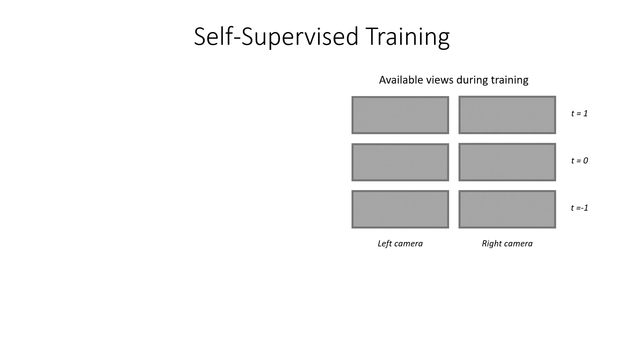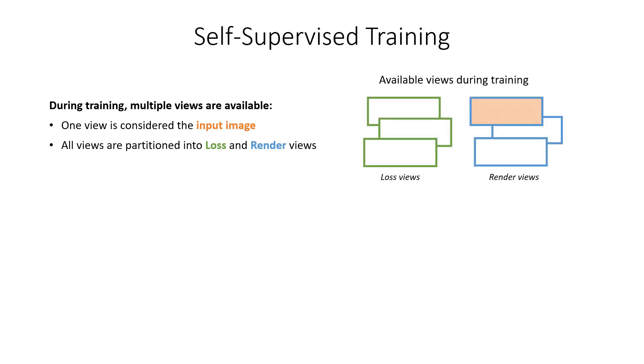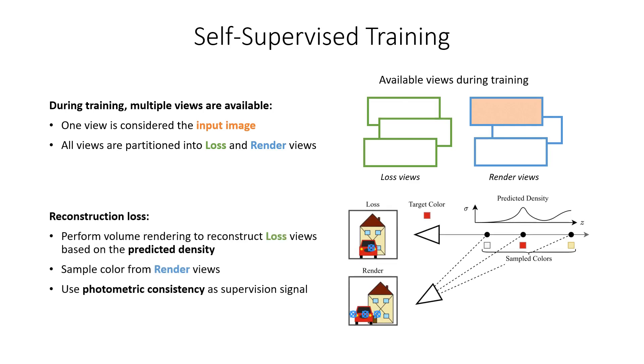One of the frames is considered the input frame from which we reconstruct the scene. We partition all frames into two sets, lost frames and render frames. We perform volume rendering to reconstruct the frames in the lost partition. Color is sampled from the frames of the render partition using the predicted densities. The photometric consistency between the reconstructed frames and the frames in the lost partition serves as the supervision signal for the density field.